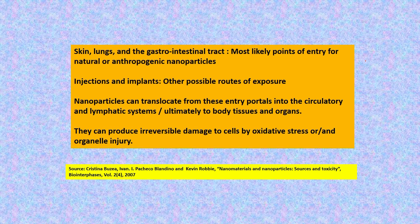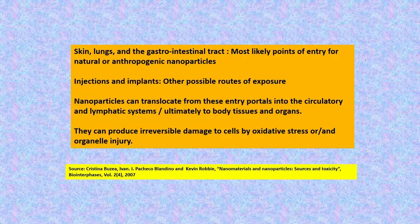It has been found that skin, lungs, and gastrointestinal tracts are the most likely points of entry for natural and anthropogenic nanoparticles into the bodies of animals and humans. They may also get injected or implanted — those are other possible routes of exposure. Nanoparticles can translocate from these entry portals into the circulatory and lymphatic systems, and ultimately they may find their way to body tissues and organs, where they may have a detrimental effect.